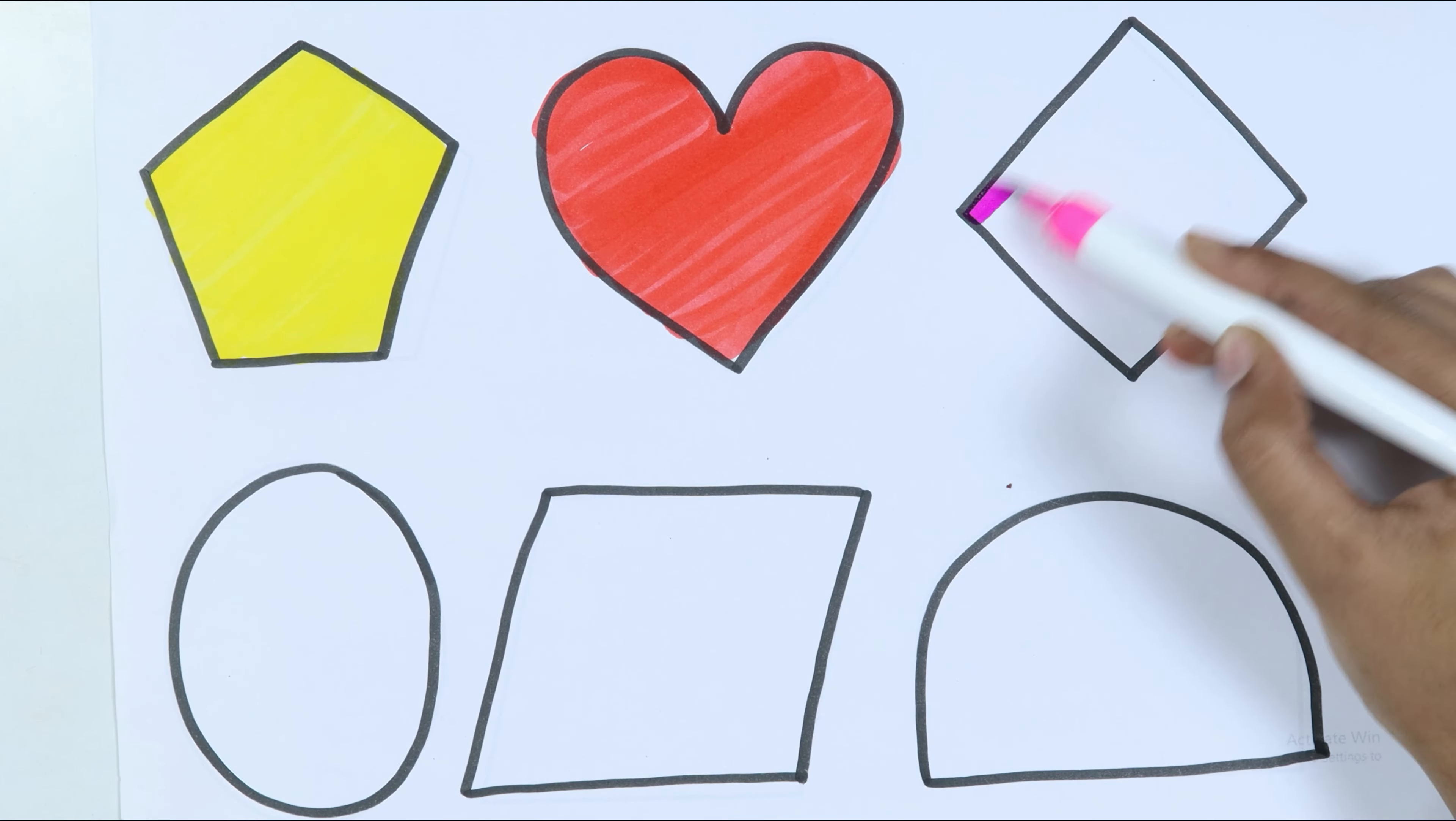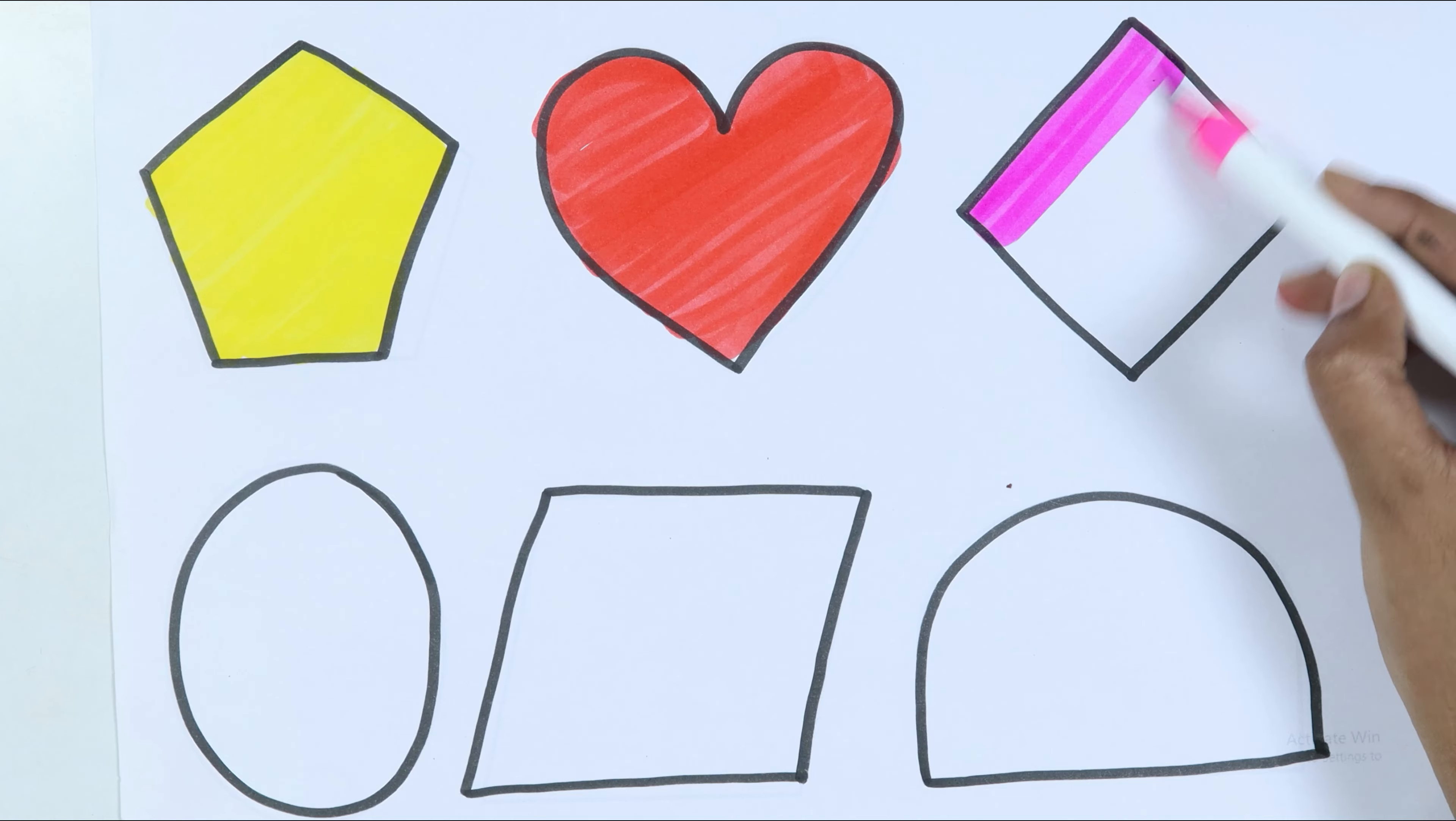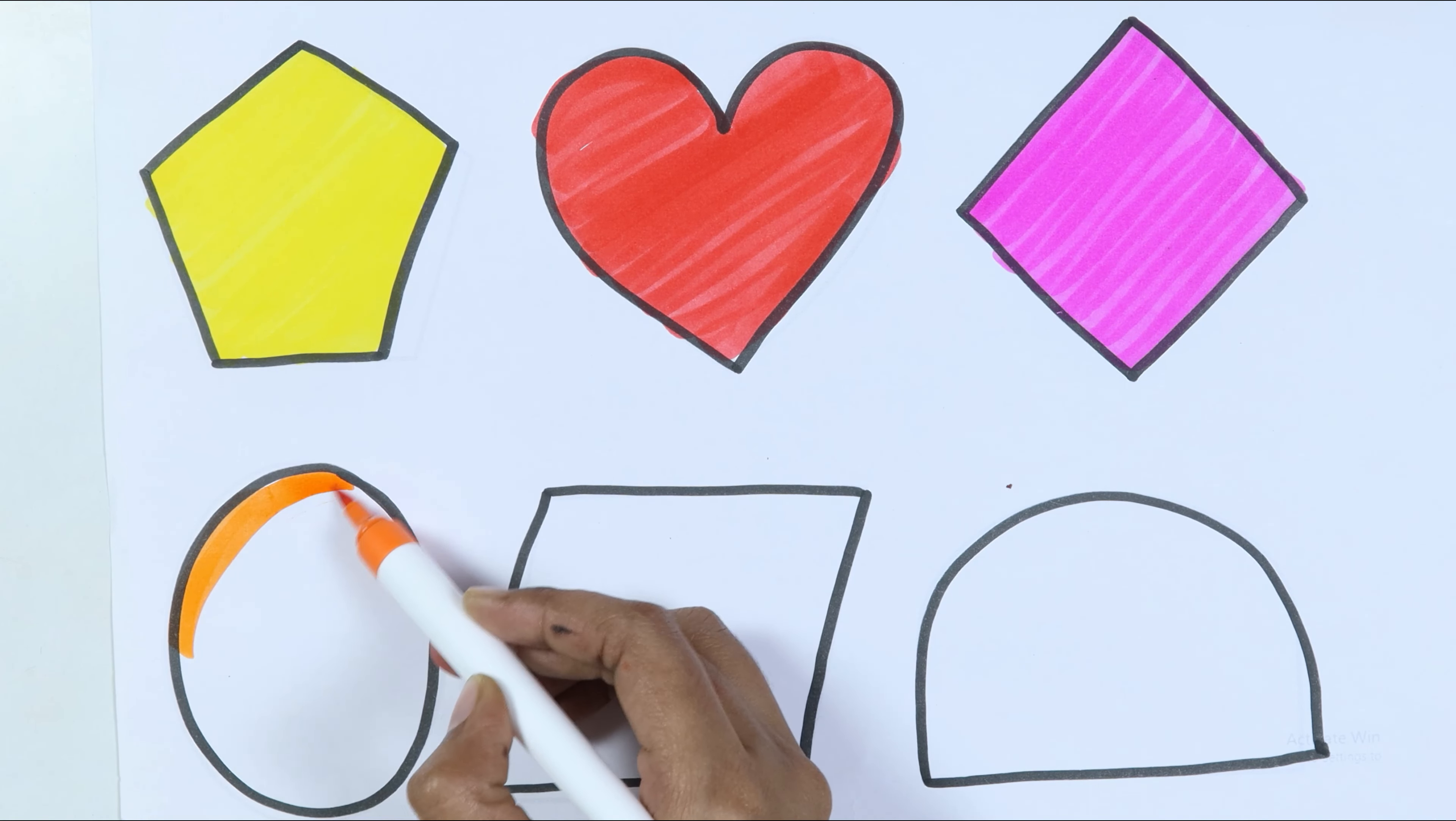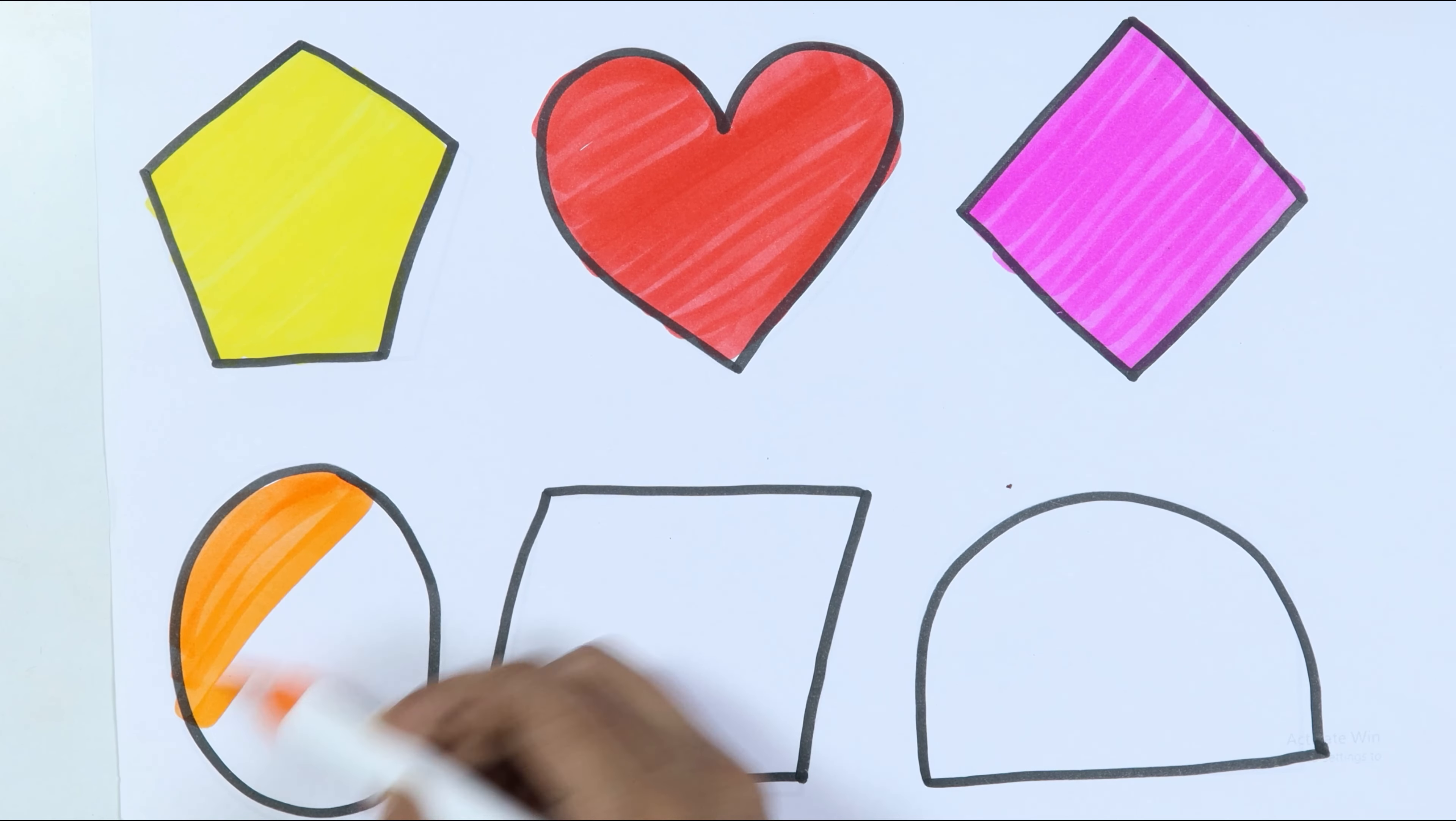Let's learn some colors. Brown color. Yellow color. Sky blue color. Pink color. Orange color. Dark blue color. Violet color. Red color. Green color. Black color.